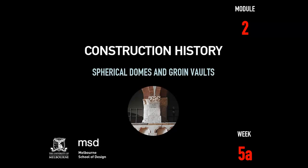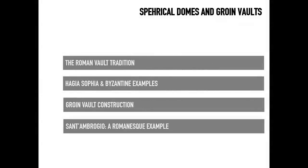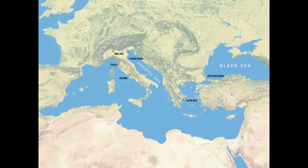Hello, welcome back to another lecture of Construction History. Today we'll talk about the Byzantine and Romanesque methods of design and construction, and we'll look in particular at two devices that were developed especially during this period: the spherical dome and the groin vault. This is a continuation of some of the techniques we discussed for Roman building in Module One.